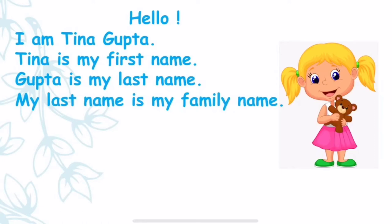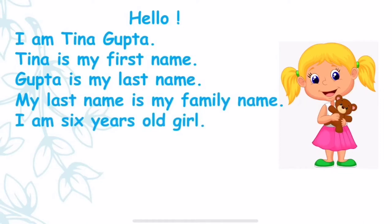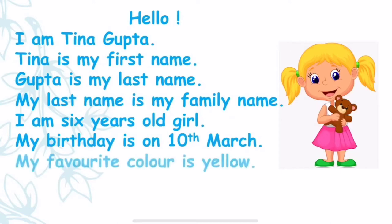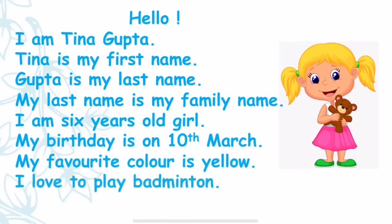I am a six-year-old girl. Here we are telling our age and our gender — girl or boy. My birthday is on 10th March. Birthday is the celebration of the day when we were born. Whenever you were born, that particular date is celebrated as your birthday every year. My favorite color is yellow and I love to play badminton. So here Tina is telling about her favorite color and her favorite game.